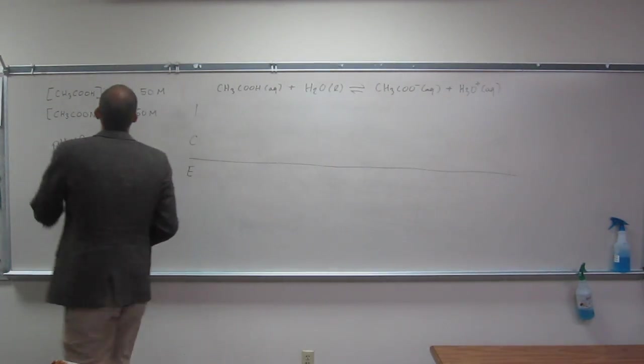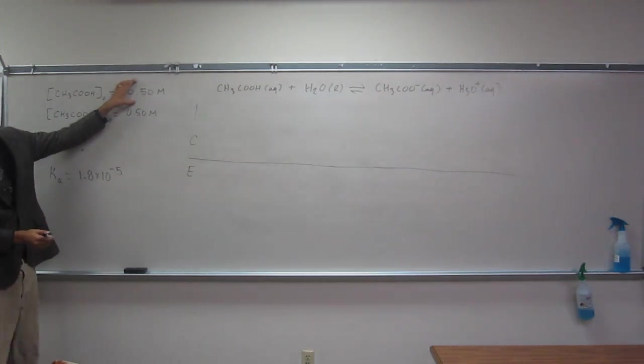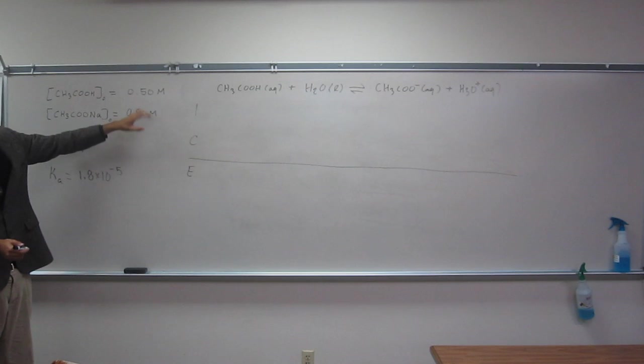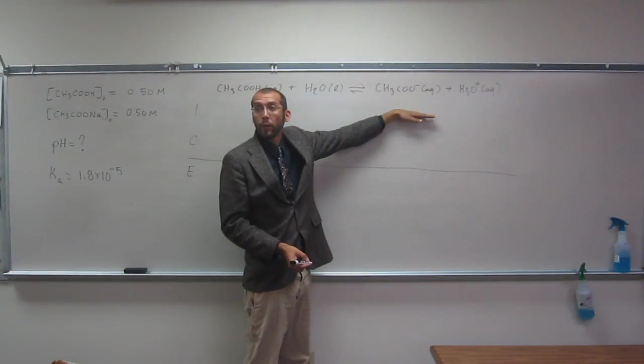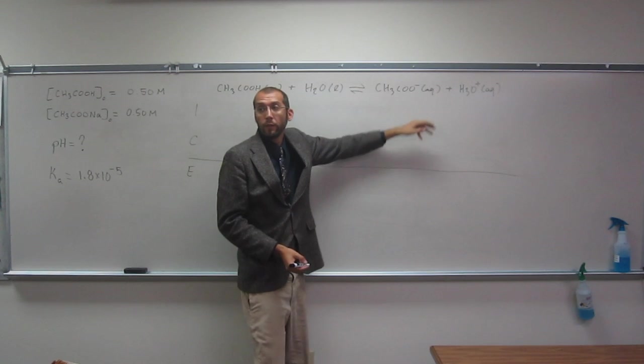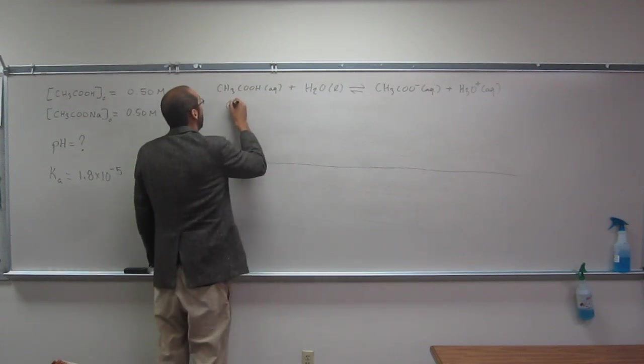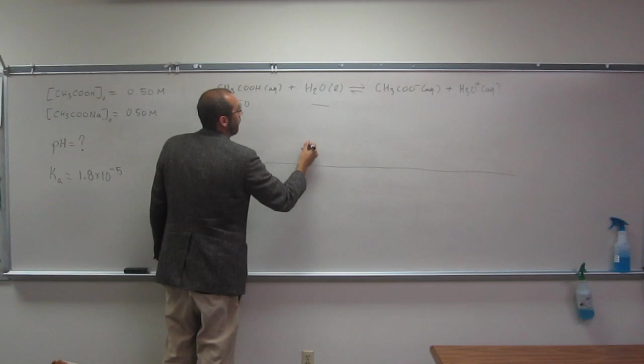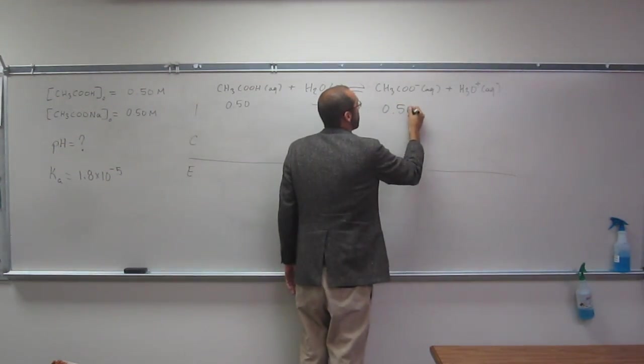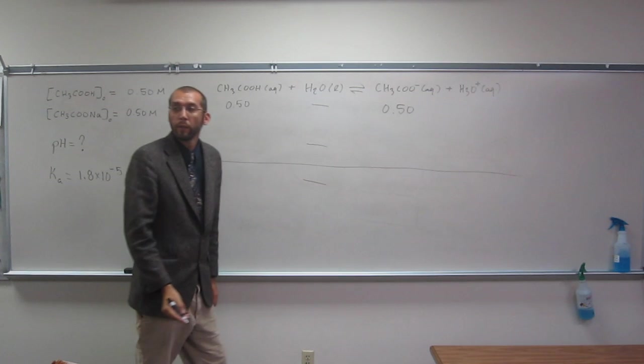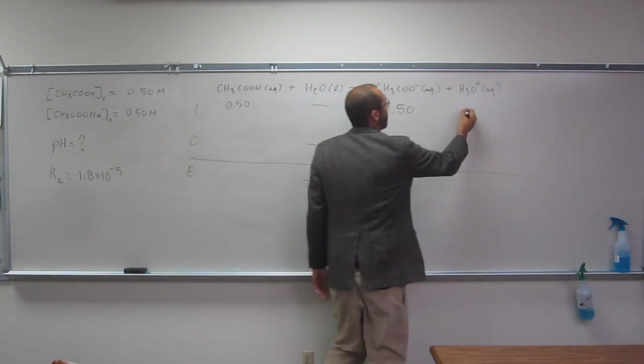But look here at what we've done now. Original concentration or initial concentration of both of them is 0.5. So instead of putting a 0 over here like we normally have done, we're going to put a 0.5. So 0.50, 0.50, like that. This one is still 0.